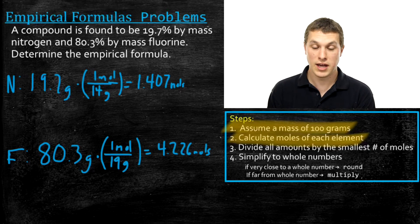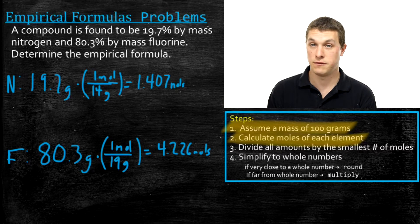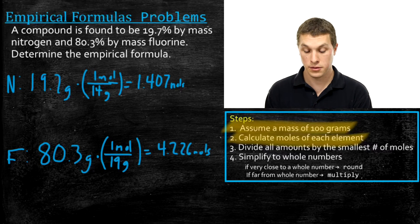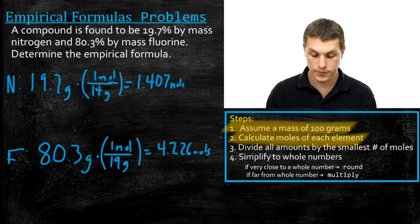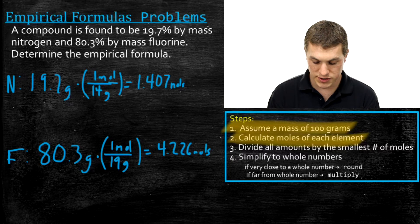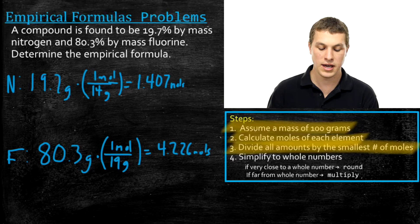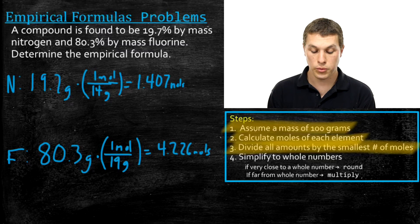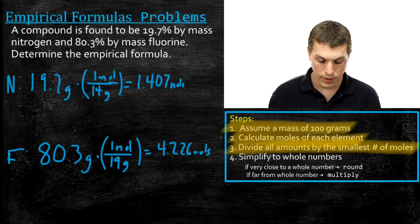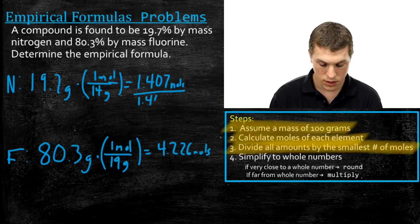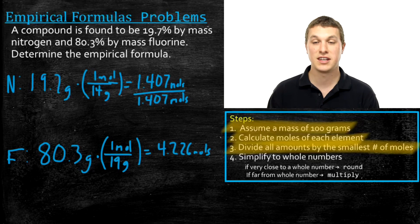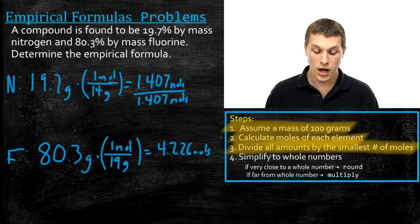We've done steps one and two. In step one we assumed 100 grams, giving us 19.7 grams nitrogen and 80.3 grams fluorine. In step two we converted to moles so we could compare the actual number of nitrogen atoms to fluorine atoms. Now in step three, we divide all the mole amounts by the smallest number of moles. Nitrogen has 1.407 moles, fluorine has 4.226 moles, so the smaller number is 1.407. We divide both values by 1.407 to get a simple whole number ratio.